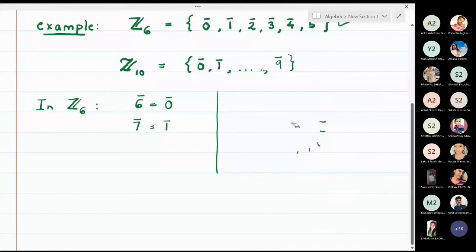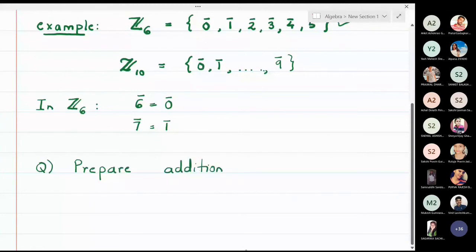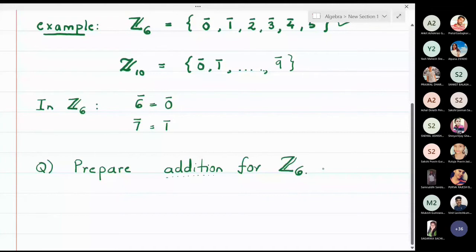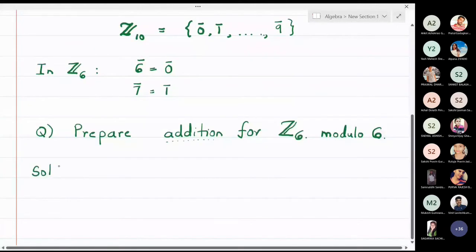Now we will prepare an addition table for Z6. This addition is not the usual addition — it is called addition modulo 6. When we work through this problem you will understand the complete situation.